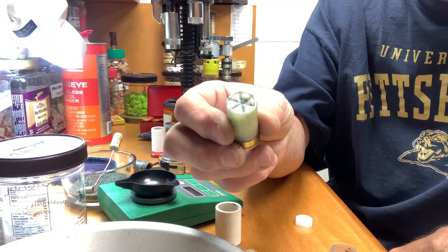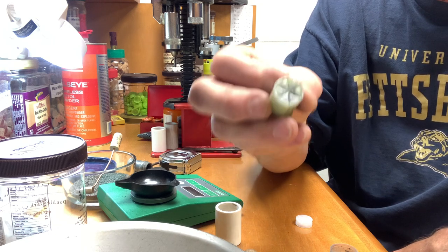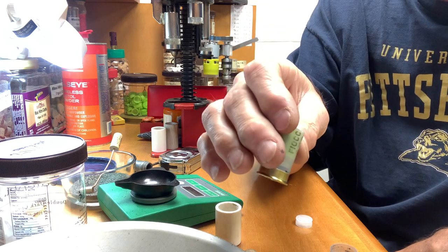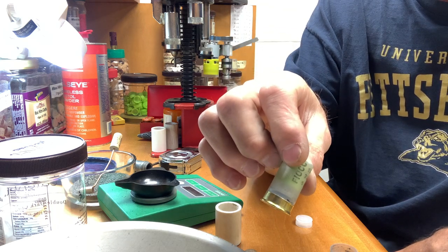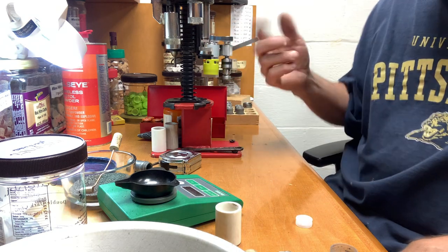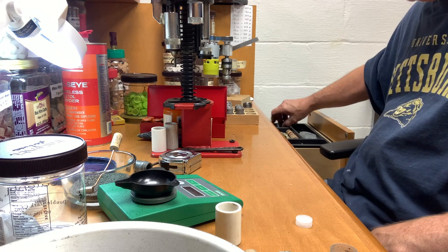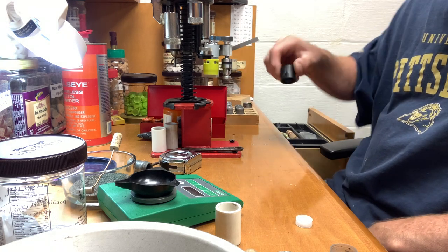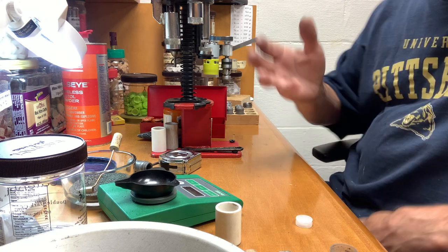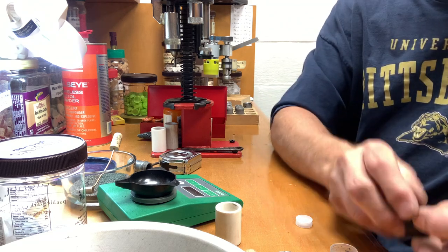So I had an old Lee Load-All 12 gauge that I think I didn't have any use for it because I needed a six point star crimp. But I did pick up a six point star crimp for this, for the mac, I got it now. So the Lee Load-All I was just going to take it off the bench and get rid of it.